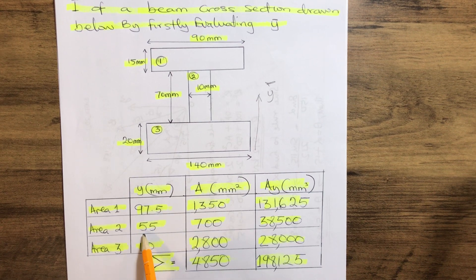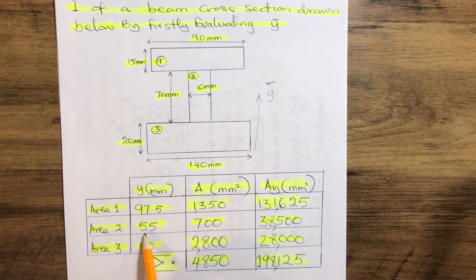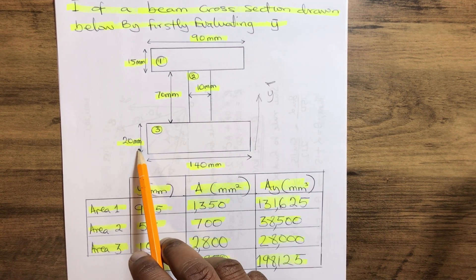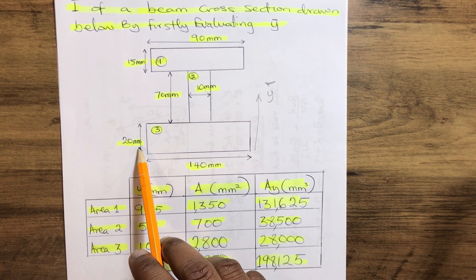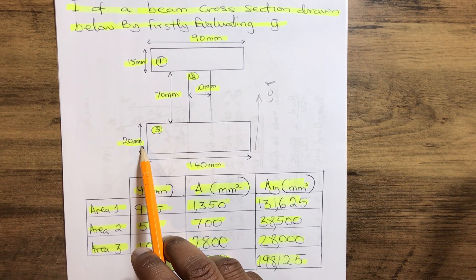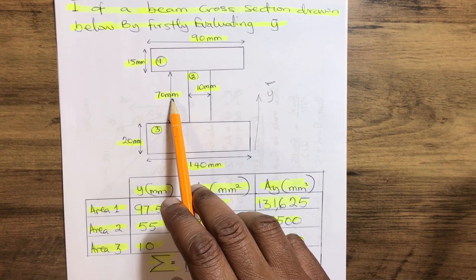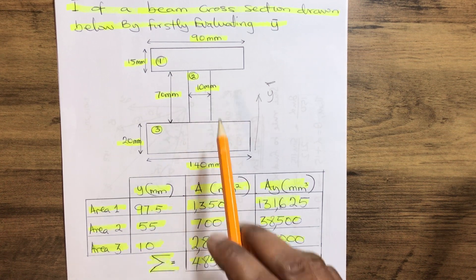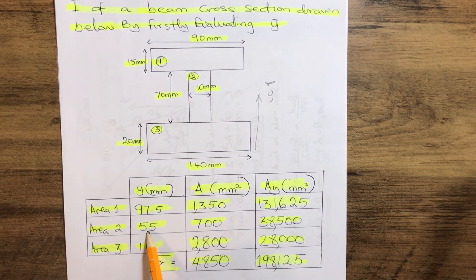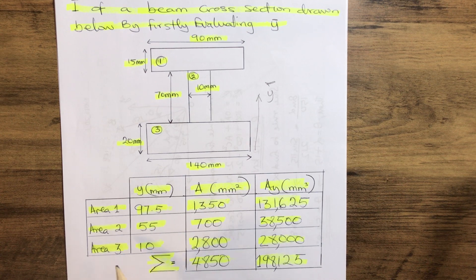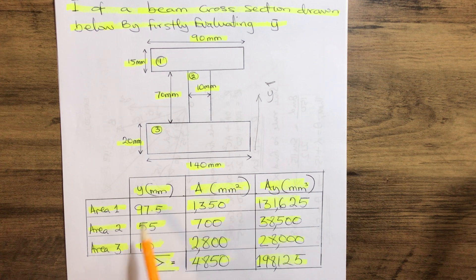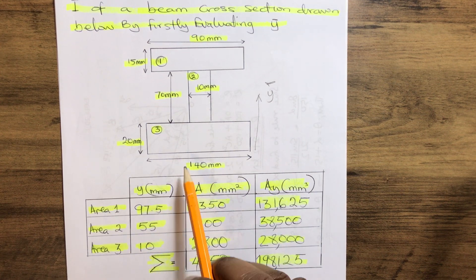How do we calculate the Y of section area 2, which is the one given below? We add the depth of the third to half of the depth of the second, which is the web, that gives us 55. Also, how do we calculate the Y for section 3?